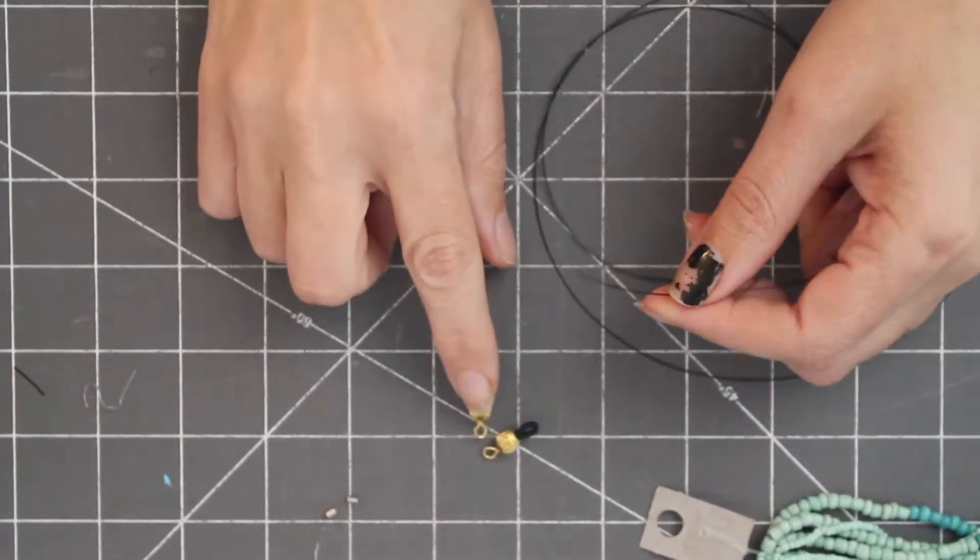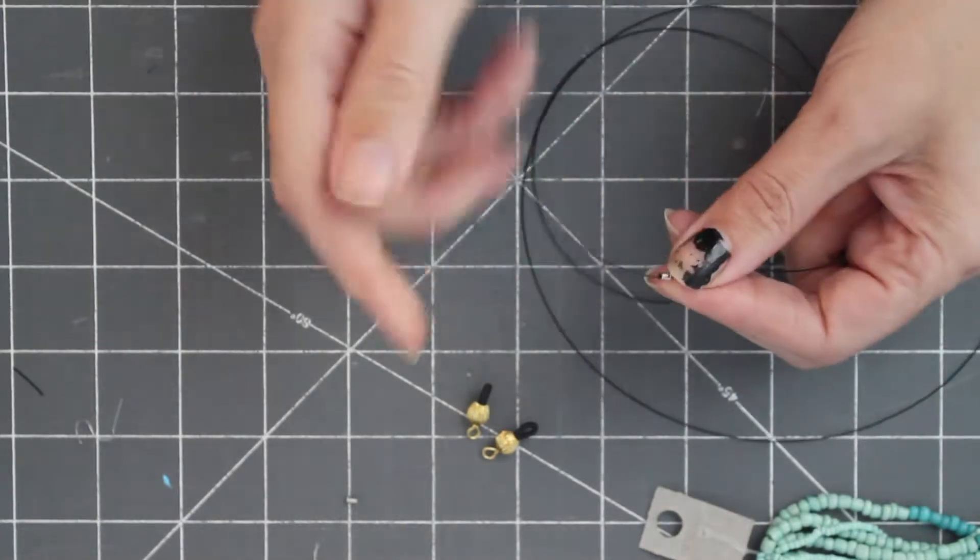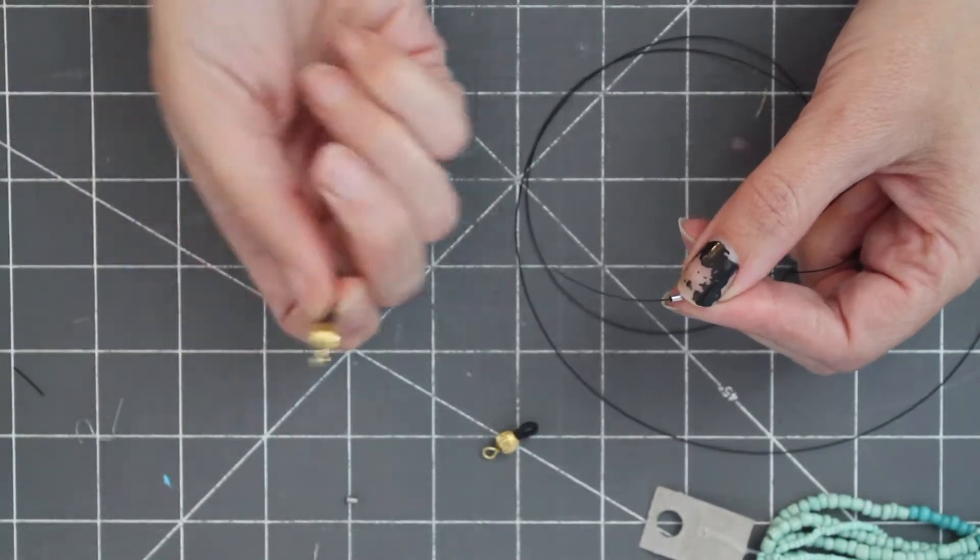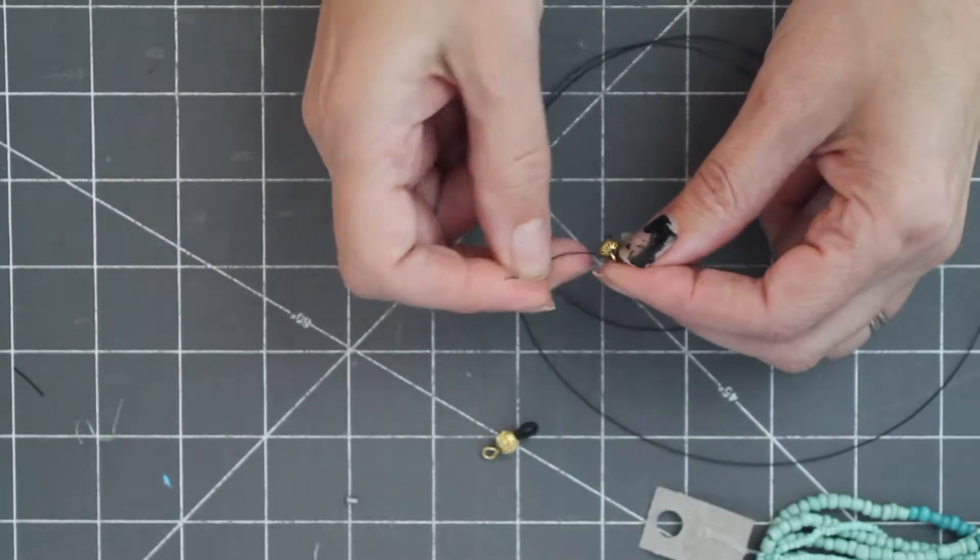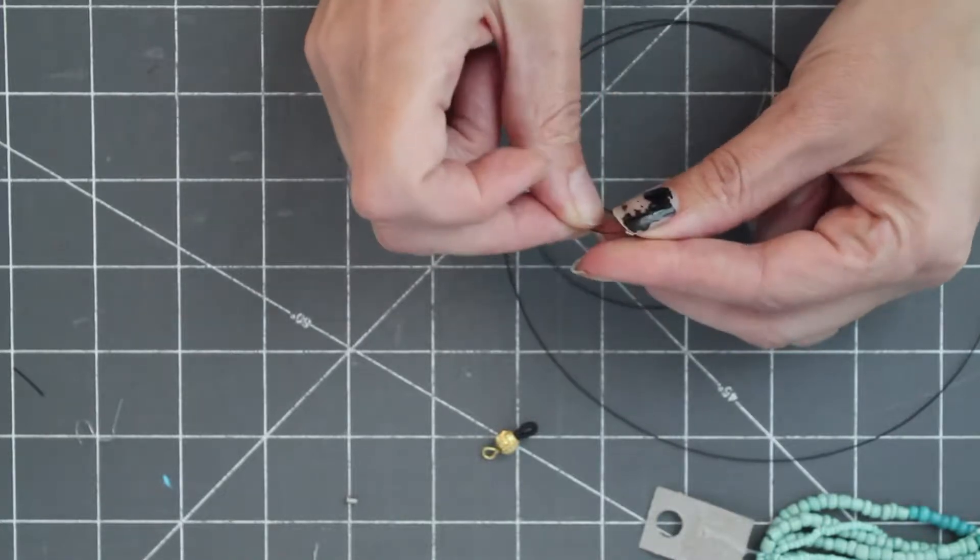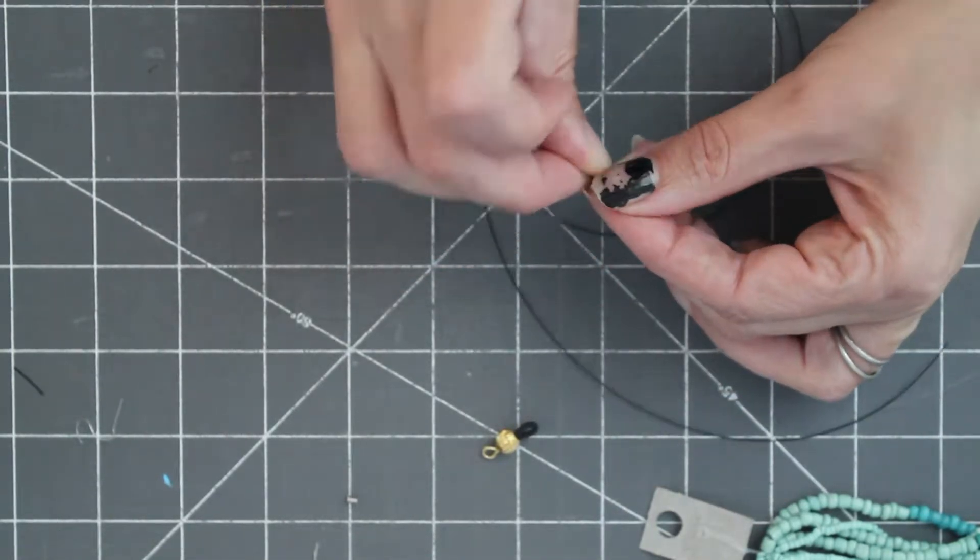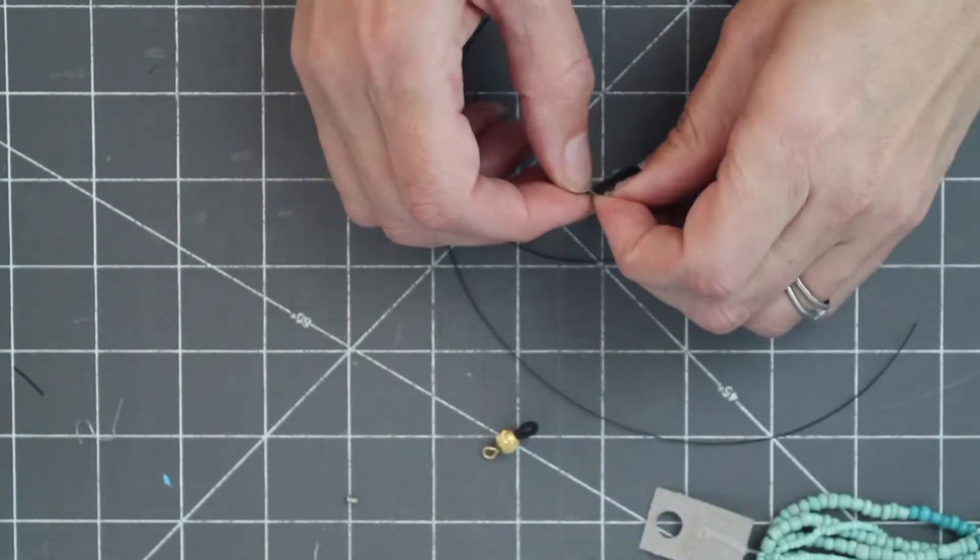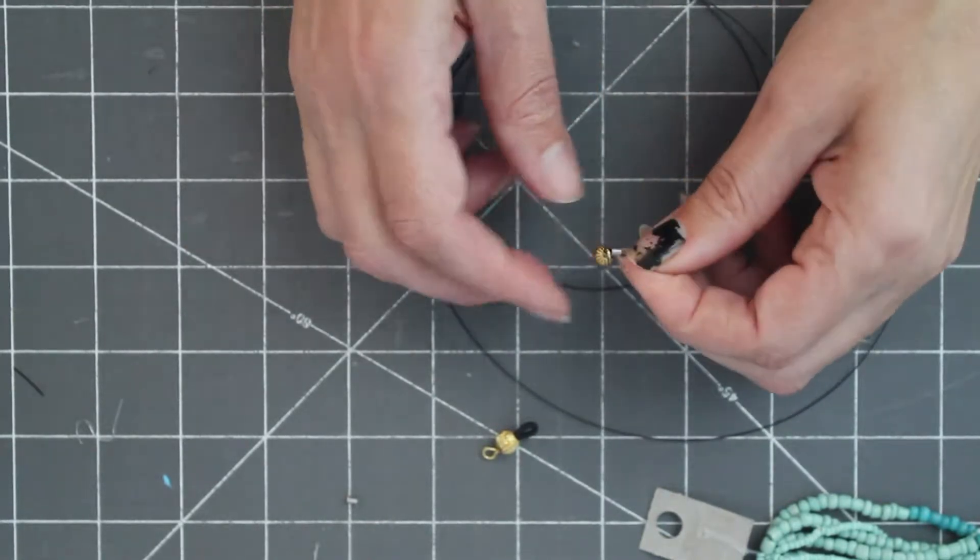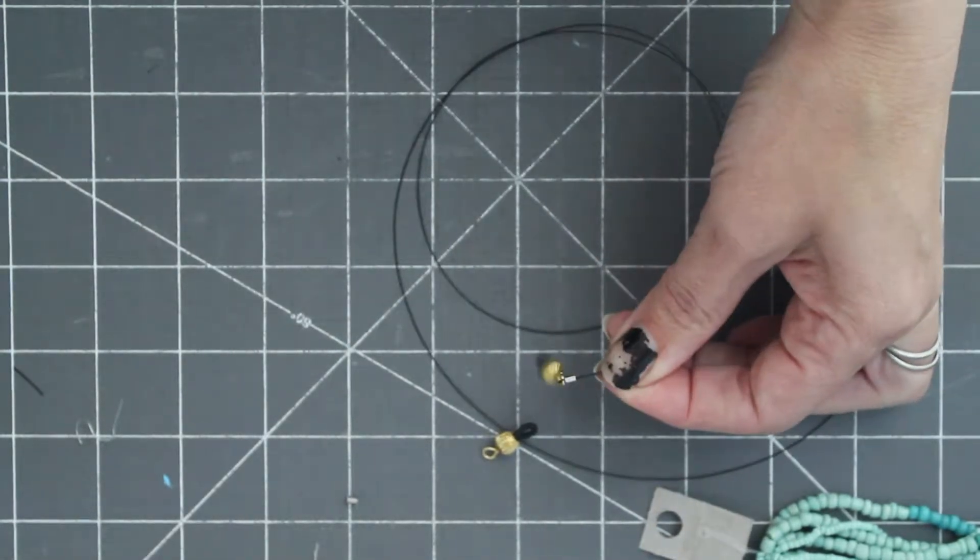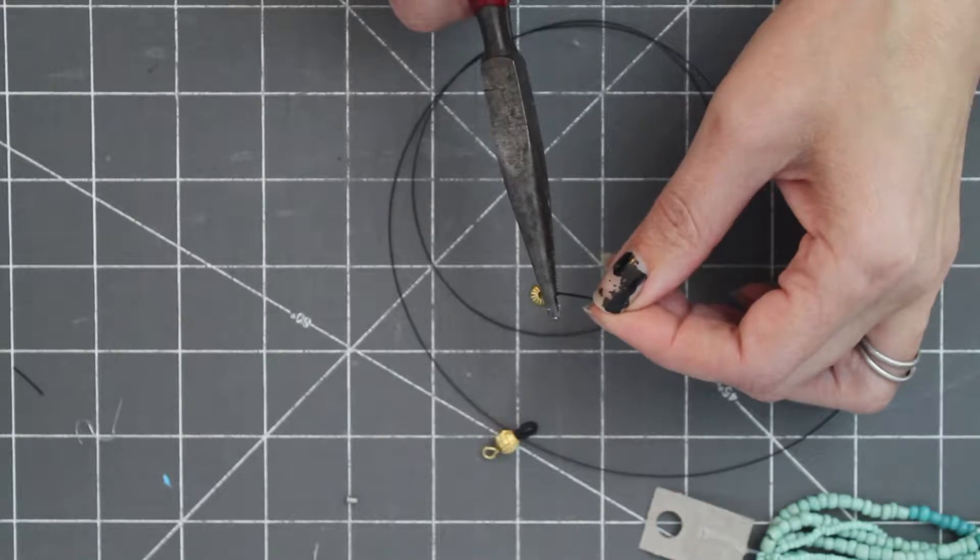Step 2, we're going to put on the eyeglass hook on one end. You'll start by taking a crimp bead and putting it on one end of the bead wire. Then you'll take the eyeglass holder, slip that into the wire as well. Then loop the wire over into the crimp bead.